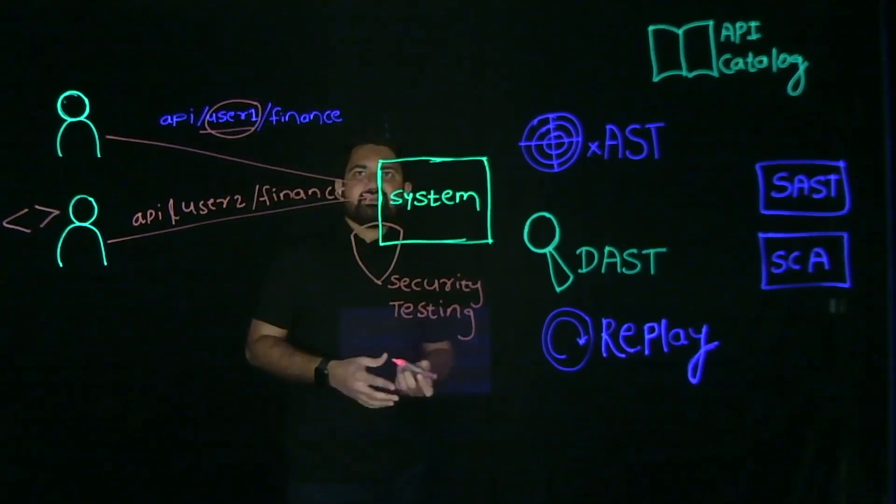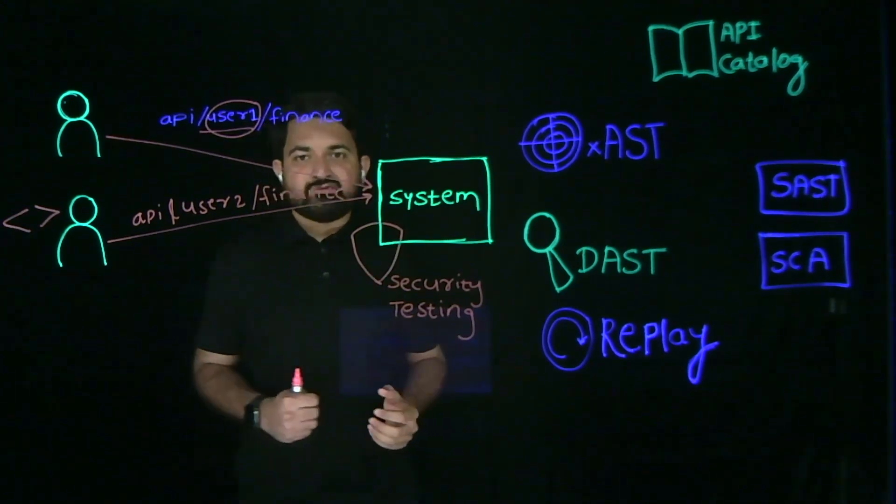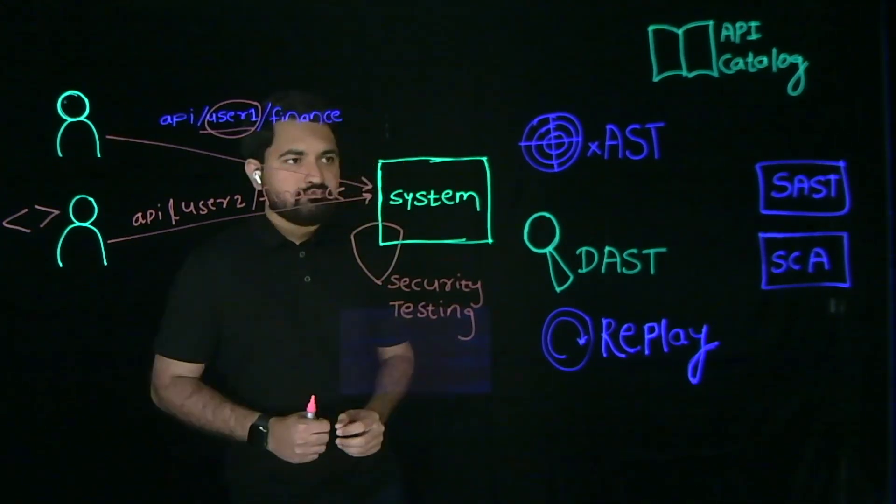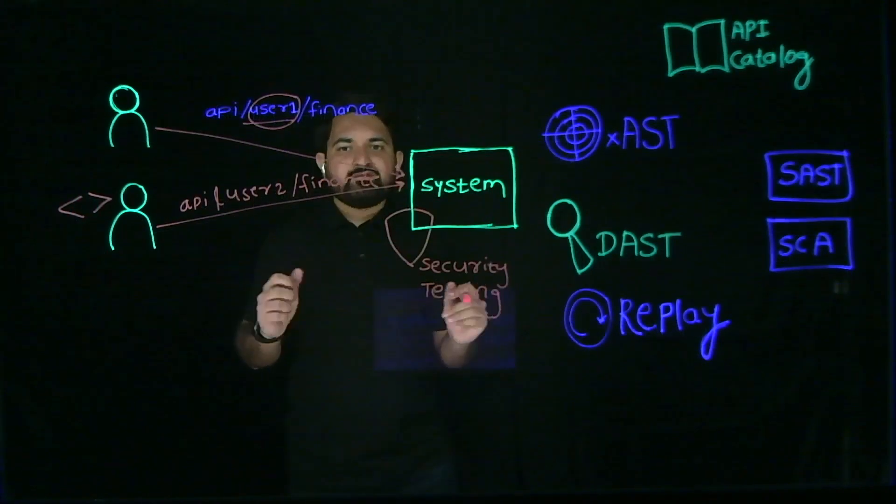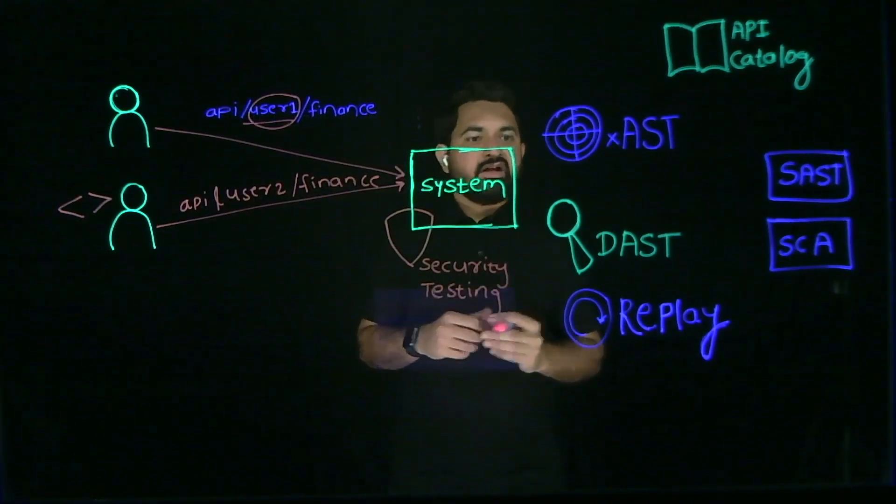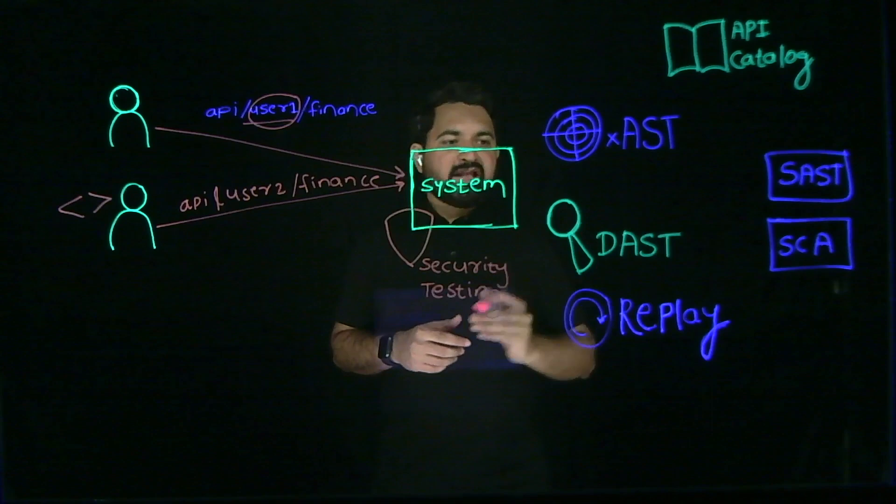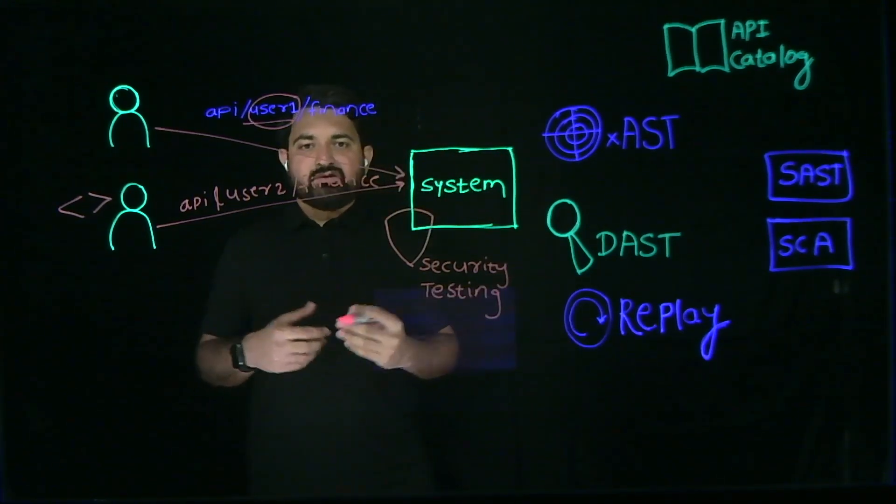If anybody can get access to valuable information like financial information just by changing the URL, that's a problem. We want to detect these vulnerabilities. What can we use? We have dynamic application security testing, what we call DAST.